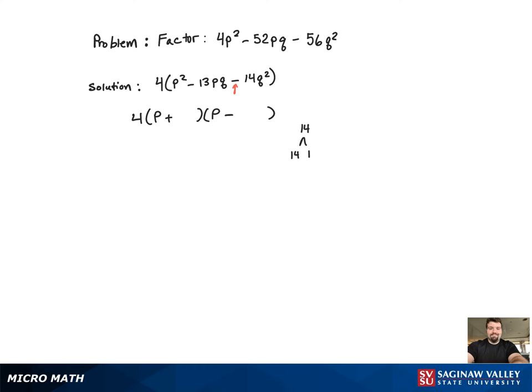Now we need to factor the 14 and see which pair will produce a 13. We can see that 14 and 1 have a difference of 13, so those will be the ones we use.